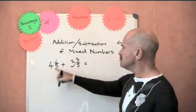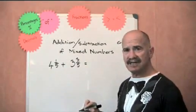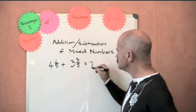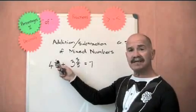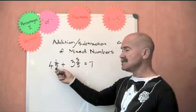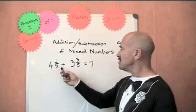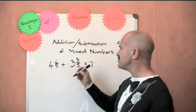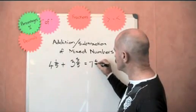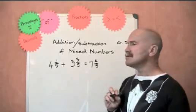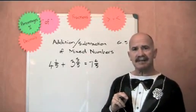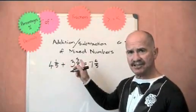If you add the whole numbers, 4 apples and 3 apples, you've got 7 apples. And then we can add the fractions, because it's easy because they're the same name at the bottom. 1 fifth plus 3 fifths is 4 fifths. So that is how we add mixed numbers. You add the whole numbers and then you add the fractions.